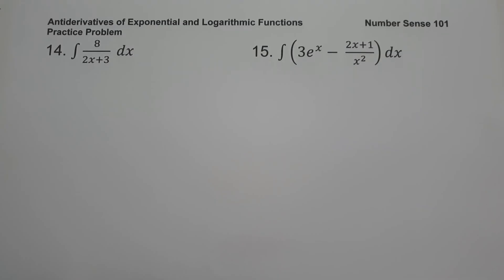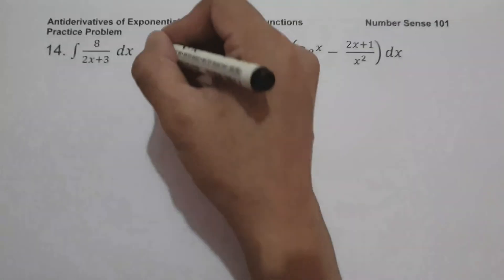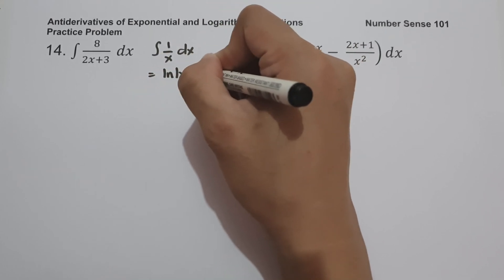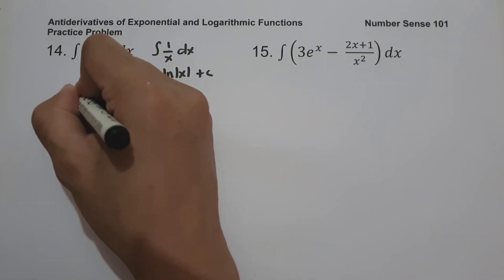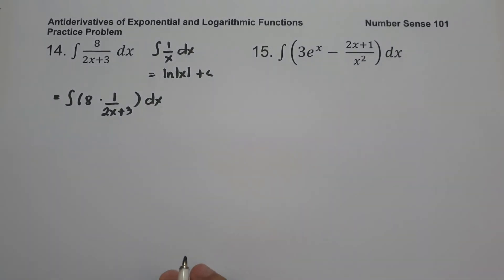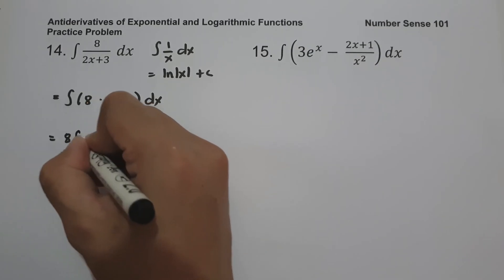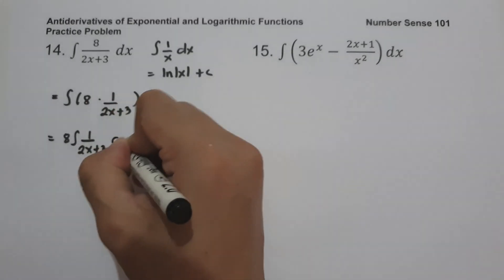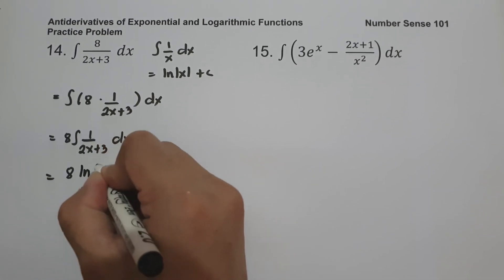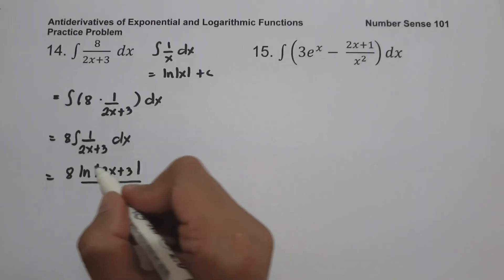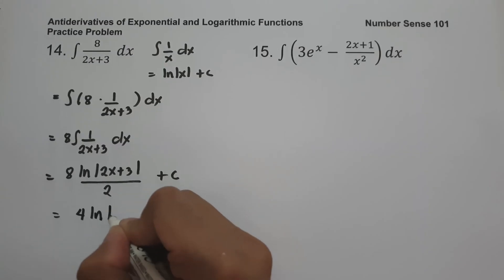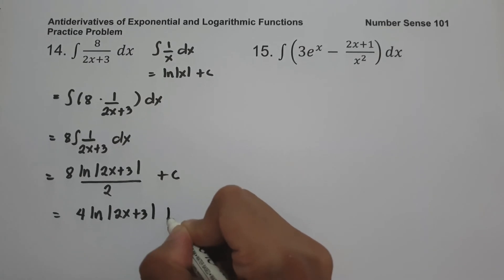On number fourteen, what is the antiderivative of 8/(2x+3) dx? We rewrite as 8 · (1/(2x+3)) and move 8 in front, giving 8 times the antiderivative of 1/(2x+3) dx. The antiderivative of 1/(2x+3) is ln|2x+3| divided by the derivative of (2x+3), which is 2. So we get 8 · (ln|2x+3|/2) + c, which simplifies to 4 ln|2x+3| + c.